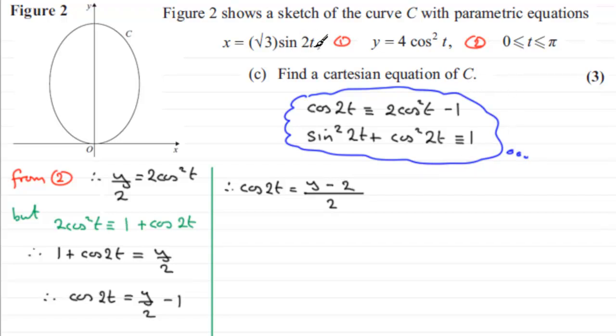So let's now turn our attention to equation one. So from equation 1, I want to make sine 2t the subject. So if we just say from equation one, then sine 2t is going to be equal to x divided by root 3. So sine 2t equals x divided by root 3.